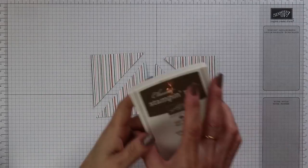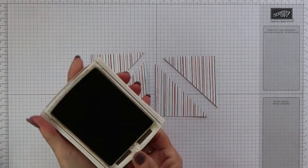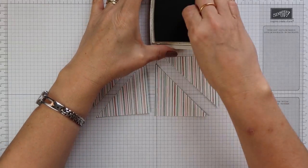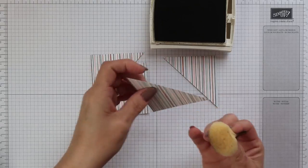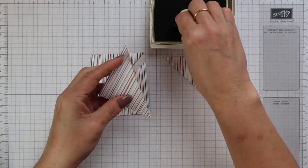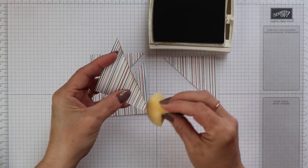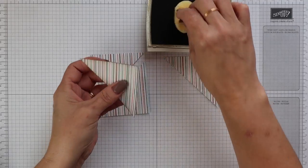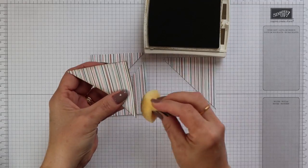Before I glue all the triangular pieces into place, I want to sponge the edges. And I'm going to use soft suede ink for this. And I have a piece of one of our stamping sponges just to flick across all the edges, just to add a little ink.